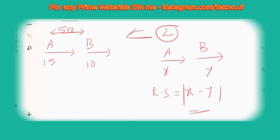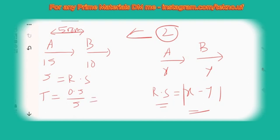Since they are going in the same direction, we apply Case 2. Relative speed = 15 minus 10 = 5 km/h. Using the time formula: Time = Distance / Speed. Convert 500 meters to 0.5 kilometers. So Time = 0.5 / 5 = 0.10 hours. That is the time A takes to cross or meet B.